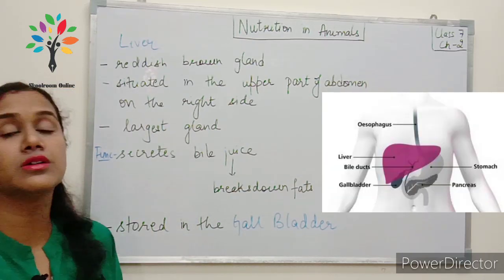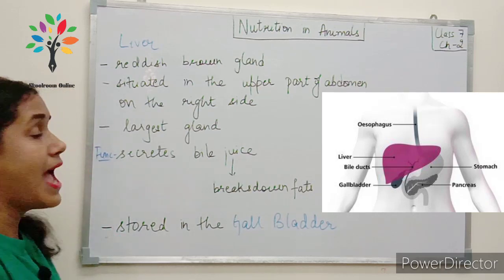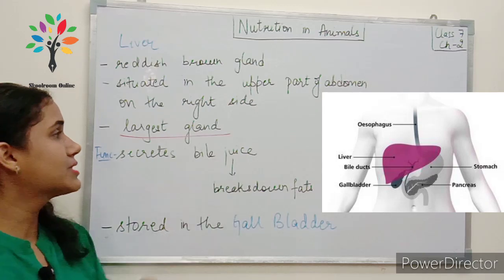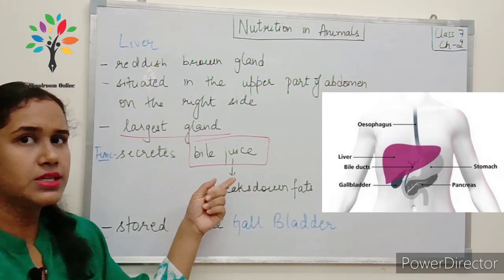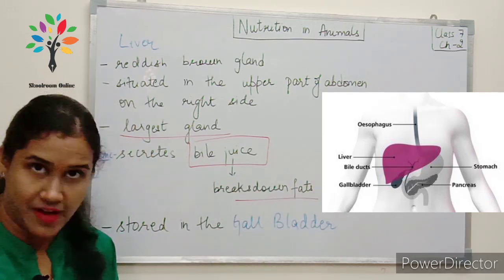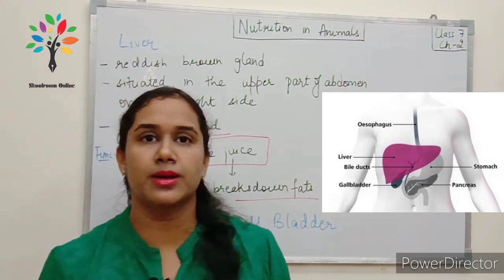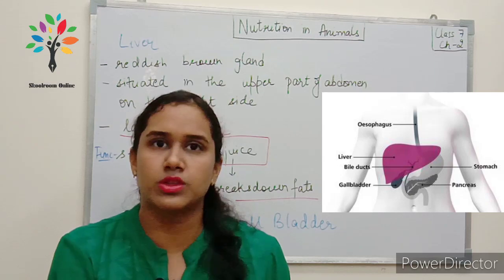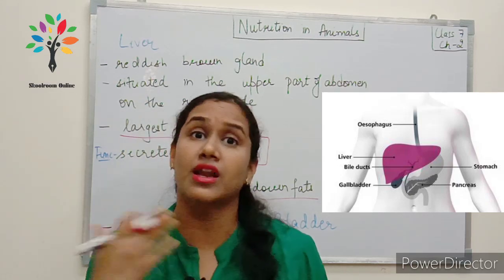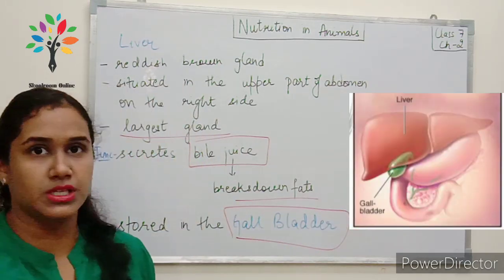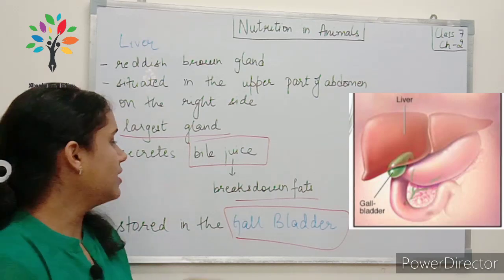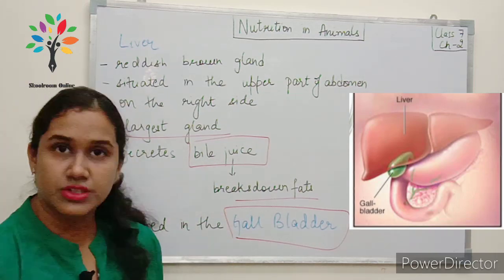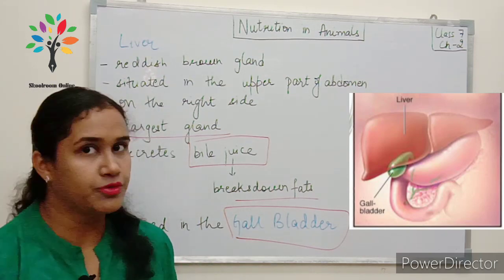The liver is a reddish-brown gland situated in the upper part of the abdomen on the right side, and it is the largest gland in our body. Its function is to secrete bile juice. Bile juice is important because it helps in the breakdown of fats. Sometimes bile juice is secreted in a large amount, and the extra bile juice gets stored in another organ called the gall bladder, from where it can go to the small intestine when required.